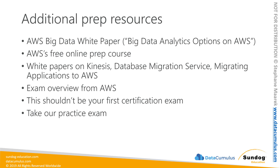Beyond this course, there are additional preparation resources you should definitely look at. Definitely download and read the AWS Big Data White Paper — it's called 'Big Data Analytics Options on AWS' — and it's a really good overview of the main services that will be on the exam, including their limitations, ideal use cases, and anti-patterns. AWS also offers a free online prep course of their own; it's only two and a half hours and covers some stuff at a high level. There are also white papers on Kinesis, the Database Migration Service, and Migrating Applications to AWS. There are a surprising number of questions on the exam about moving data from one database to another, so those white papers will help.